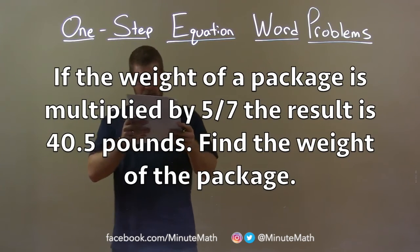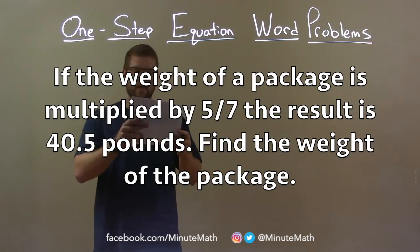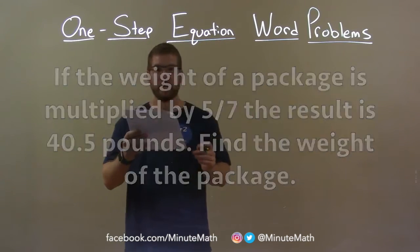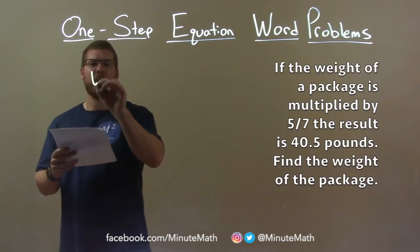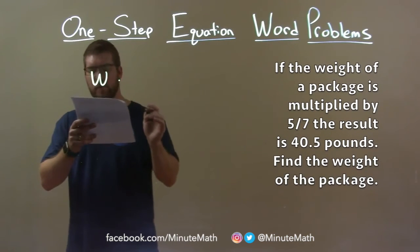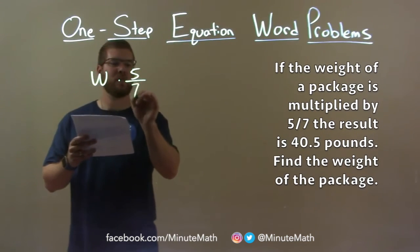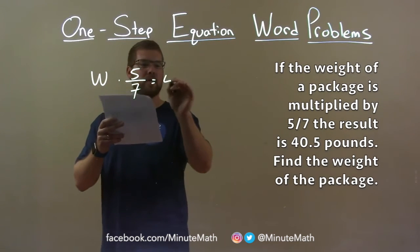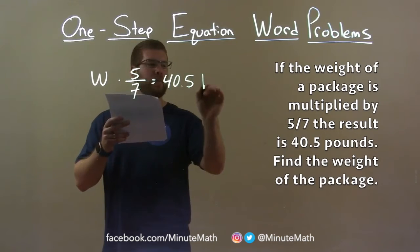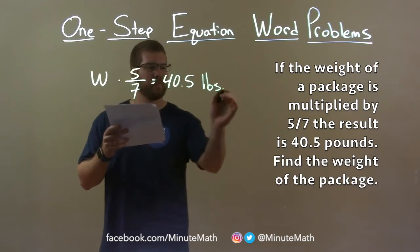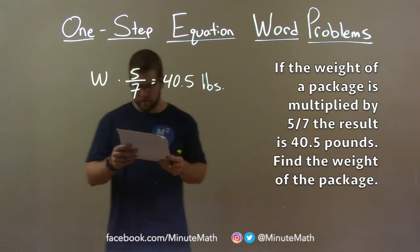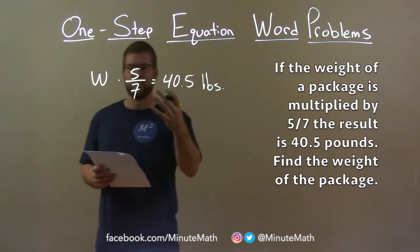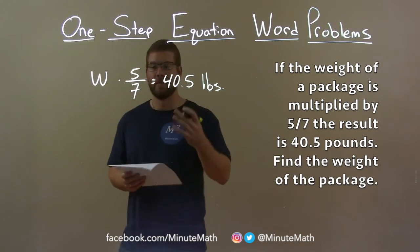If the weight of a package is multiplied by 5/7, the result is 40.5 pounds. Find the weight of the package. The weight W times 5/7 equals 40.5 pounds. We need to find W, the weight of the package.